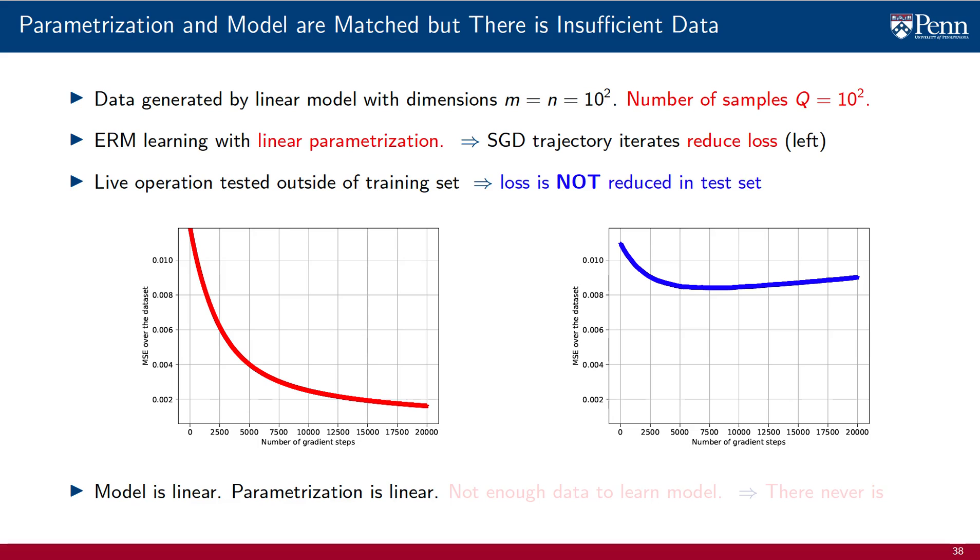The answer to this mystery is the complexity of the model relative to the amount of data that is available. We know that if we increase the amount of data in the training set, we will succeed in reducing the loss outside the training set. We saw this in our first example. But when we reduce the number of samples in the training set, we end up with insufficient data. There is not enough data in the training set to learn the model. The very important observation here is that there is never enough data. Thus, our models not only have to be matched, they have to be sufficiently simple that they can learn with amounts of data that, however large, are always insufficient.